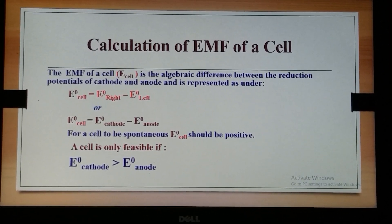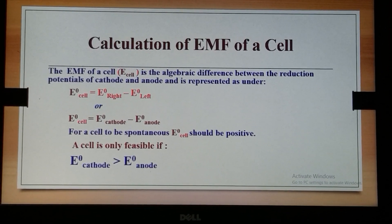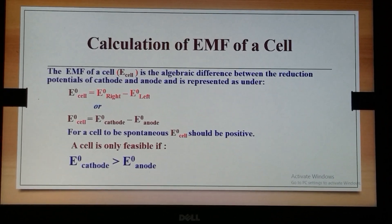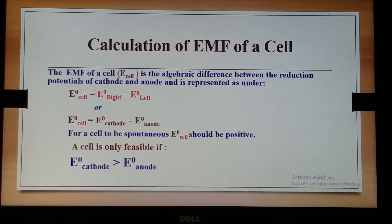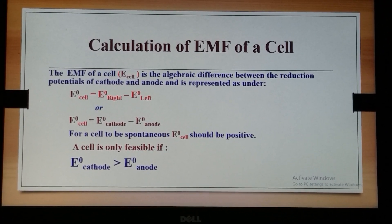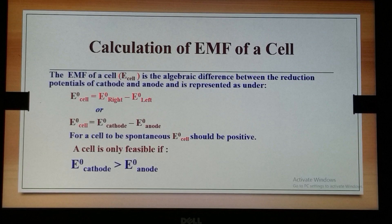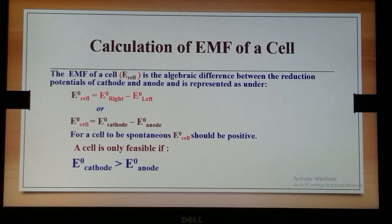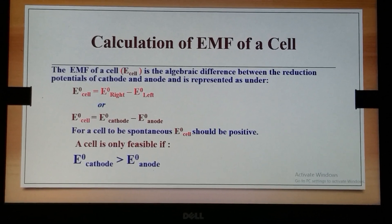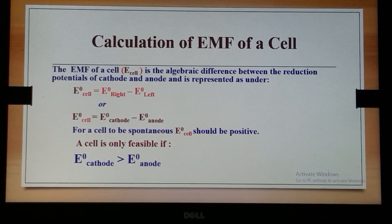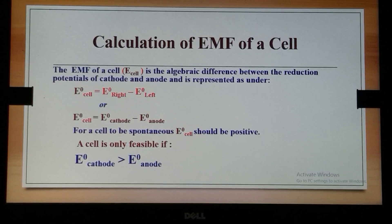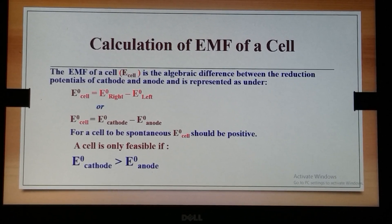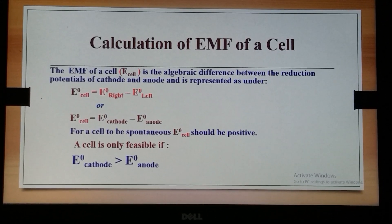The EMF of the cell is calculated as the algebraic difference between the reduction potentials of cathode and anode. We can write it as E⁰cell = E⁰right − E⁰left. Since E⁰right is E⁰cathode and E⁰left is E⁰anode, we write: E⁰cell = E⁰cathode − E⁰anode.